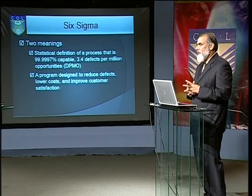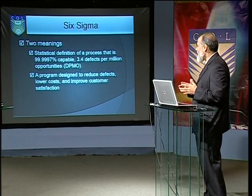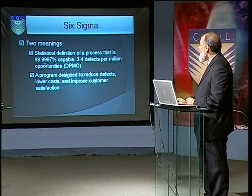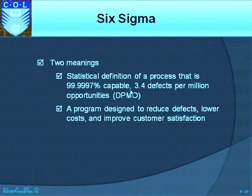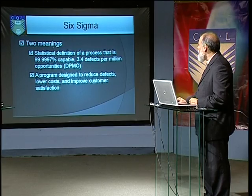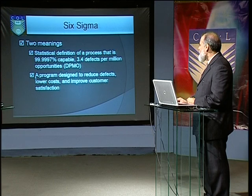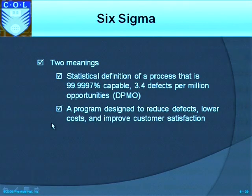The next concept in TQM is Six Sigma, which has two meanings. From the statistical perspective, it is the definition of a process that is 99.9997% capable — meaning 3.4 defects per million opportunities. From the total quality management perspective, Six Sigma is a program designed to reduce defects, lower costs, and improve customer satisfaction.